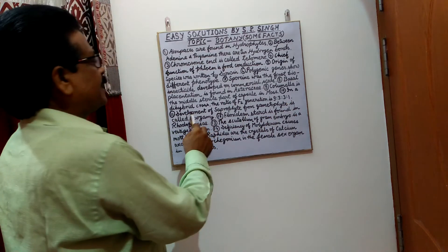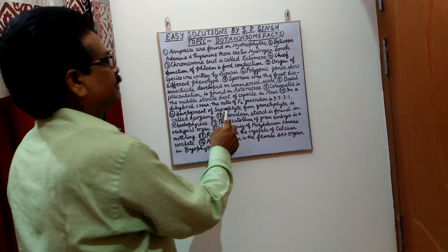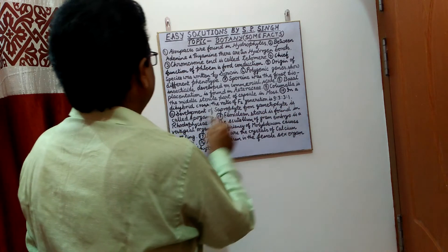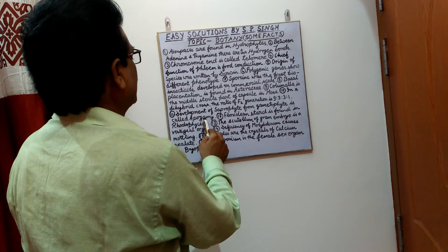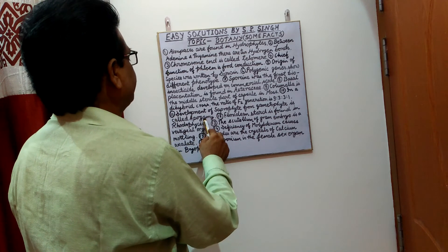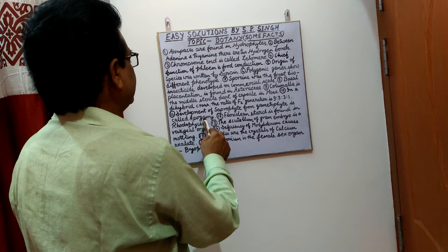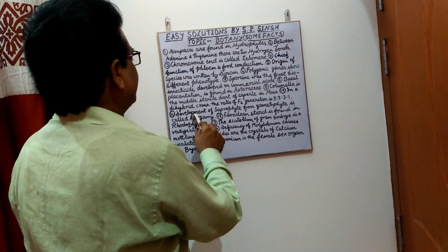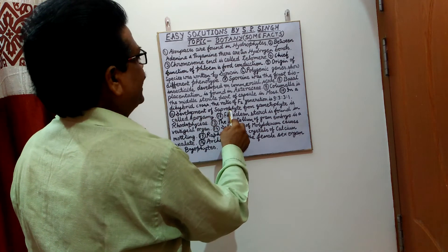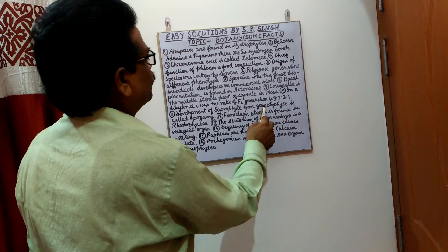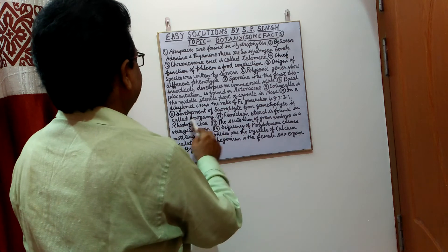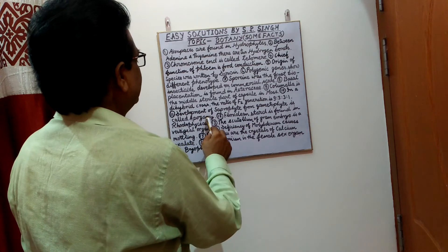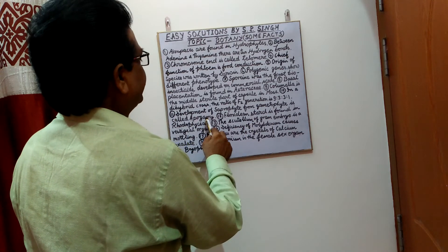Development of sporophytes from gametophyte is called apogamy. This is a very important point — development of sporophytes from gametophyte is called apogamy.